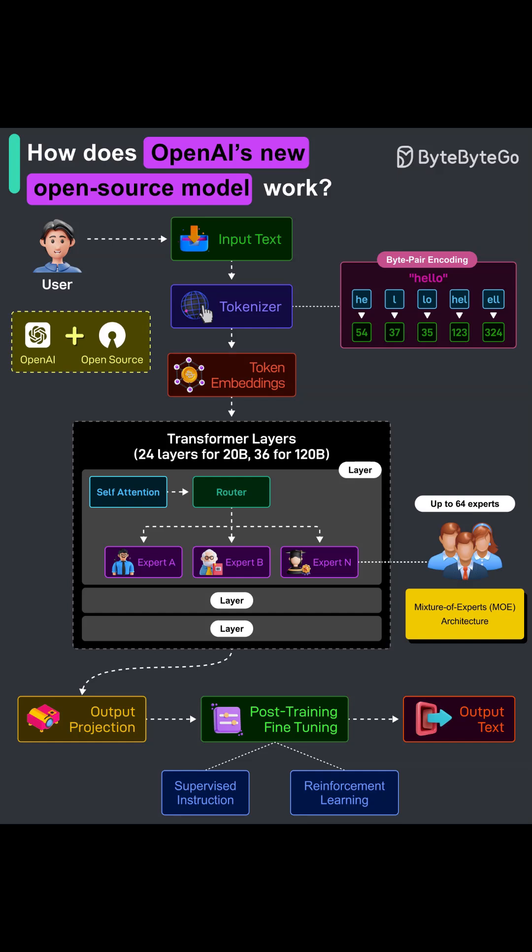The raw model then goes through post-training: supervised fine-tuning with high-quality demonstrations, followed by reinforcement learning to align behavior with helpfulness and safety. This is what turns raw capability into a useful assistant.